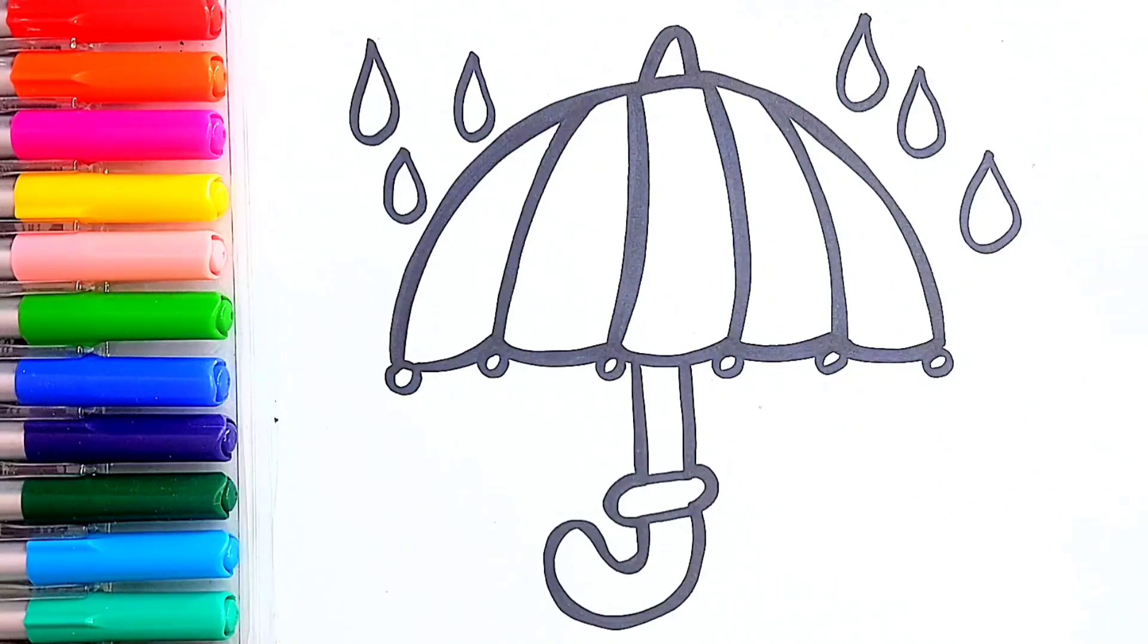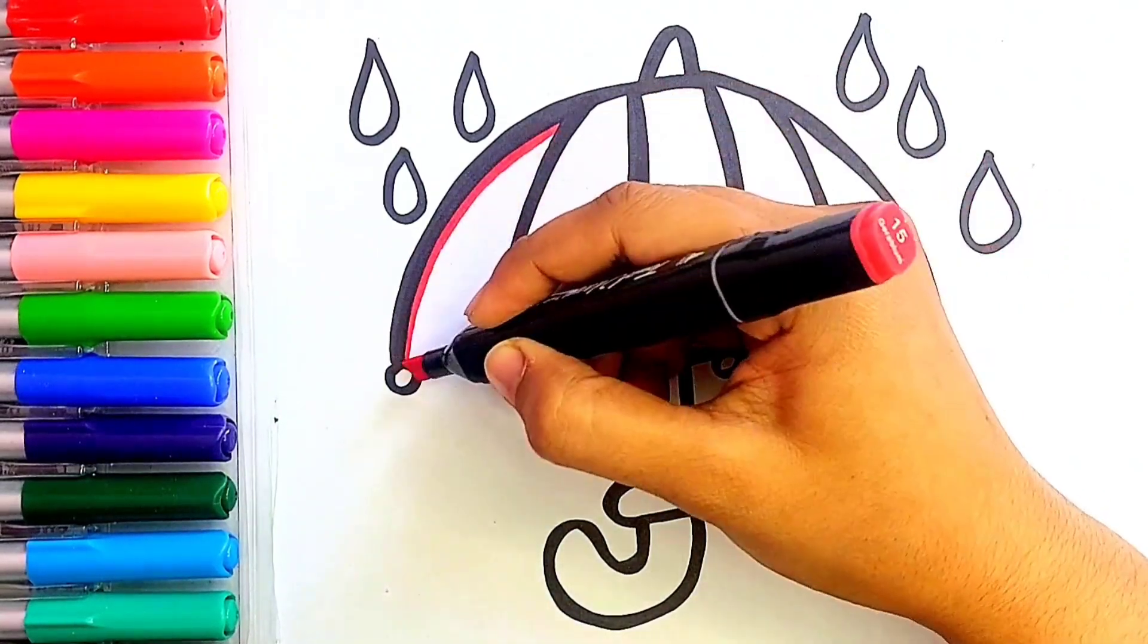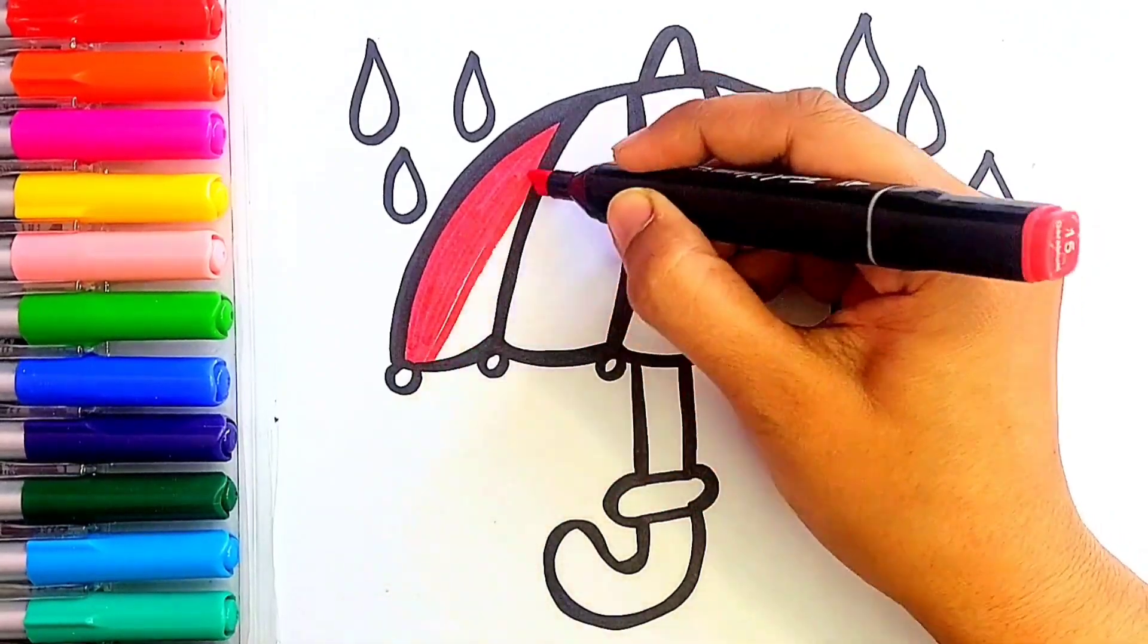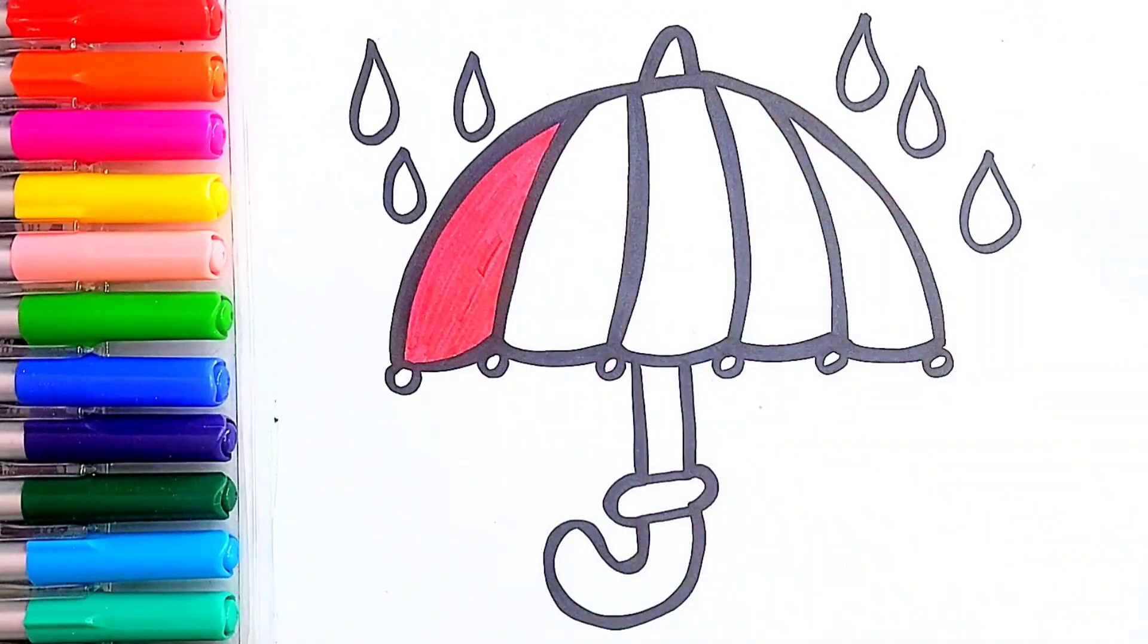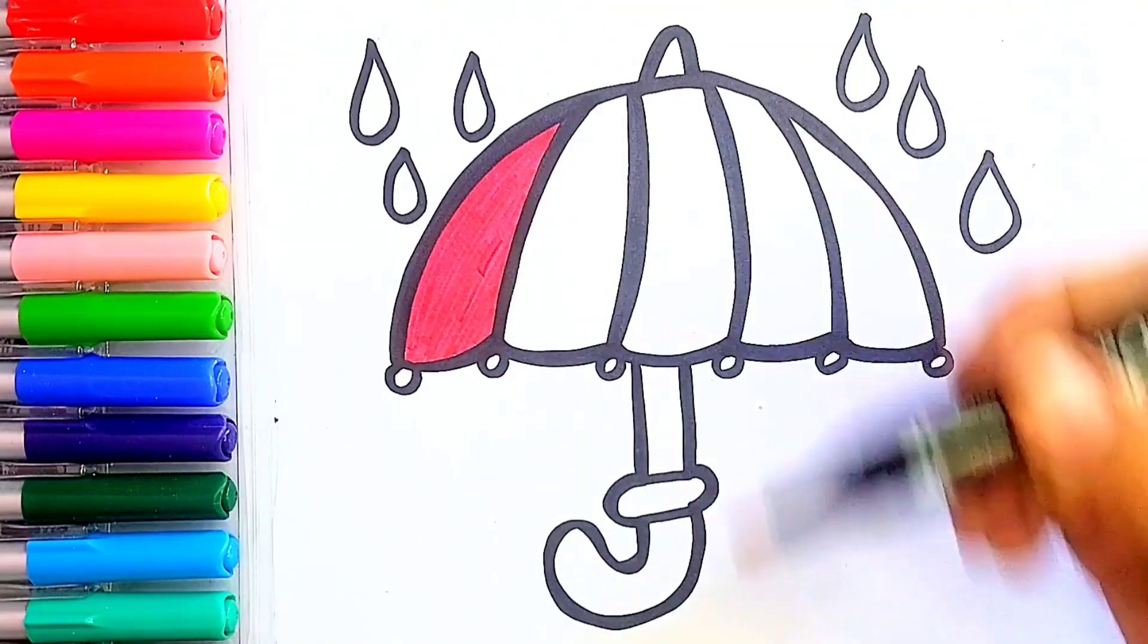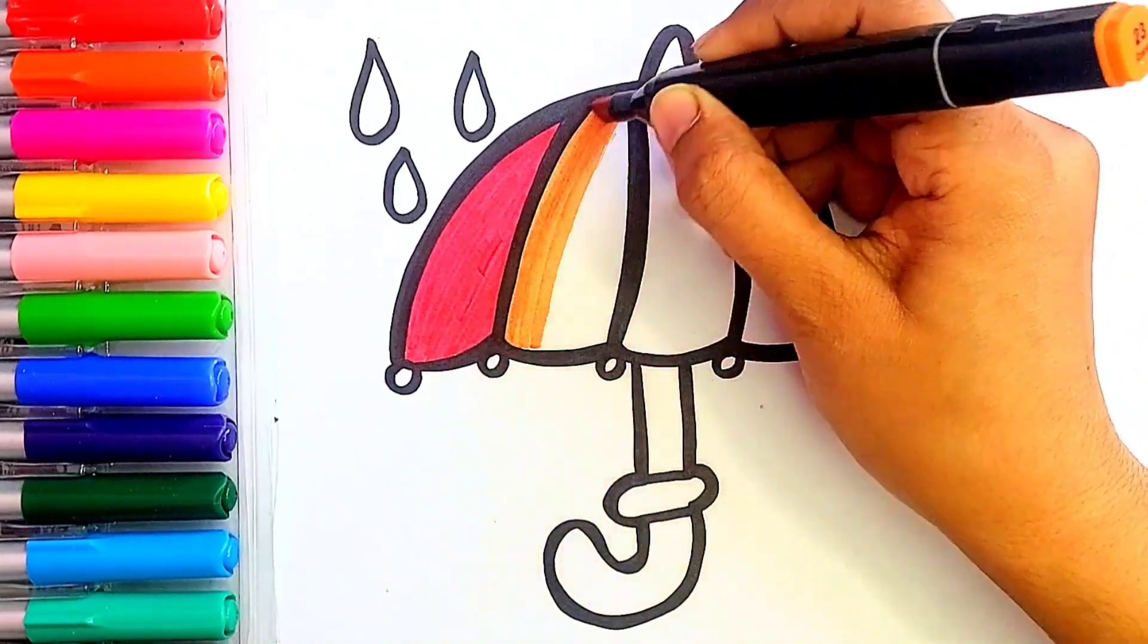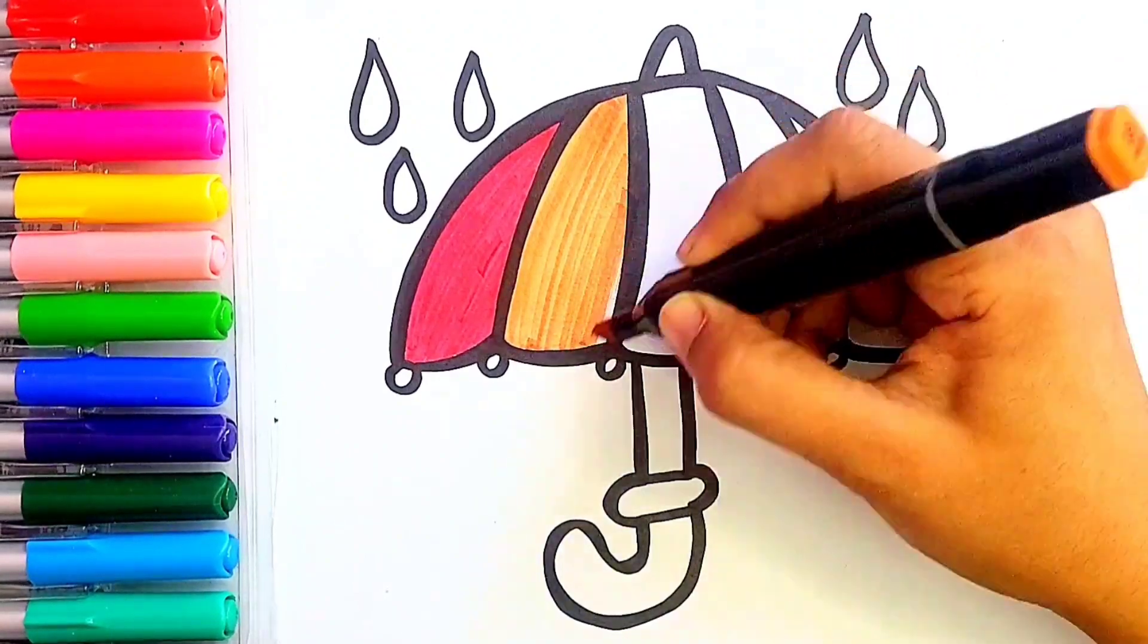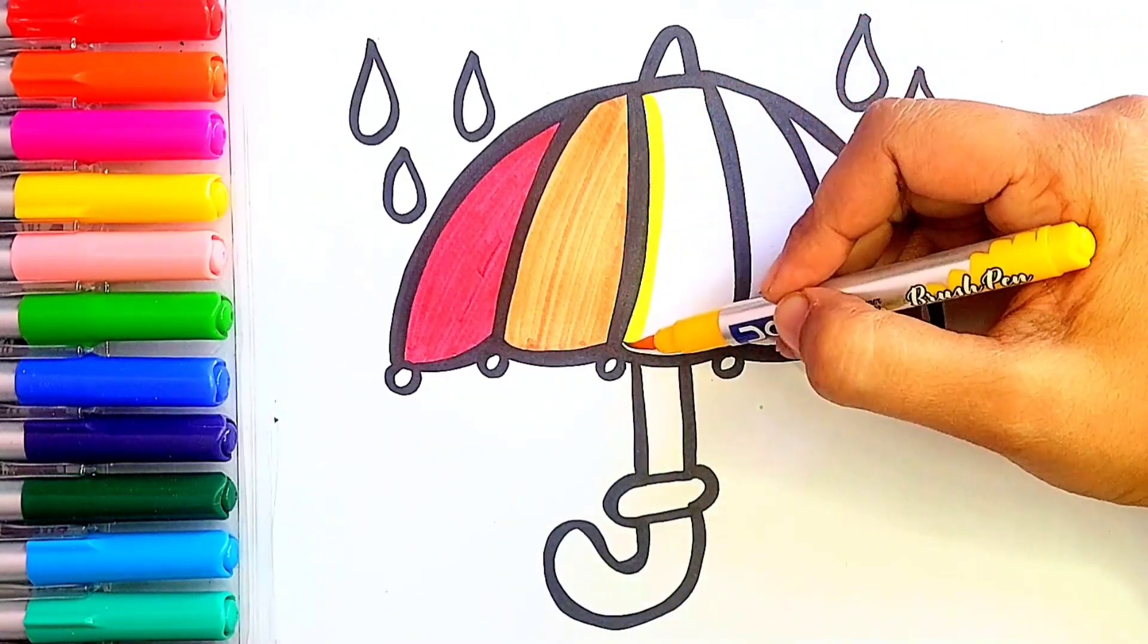For our umbrella, I am going to use rainbow colors. First I am using red color. Now I am using orange color. Now I am using bright yellow color.